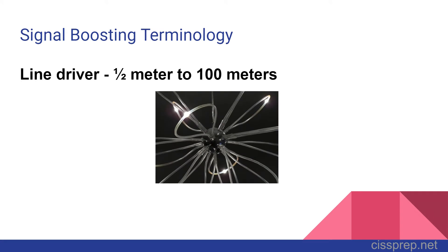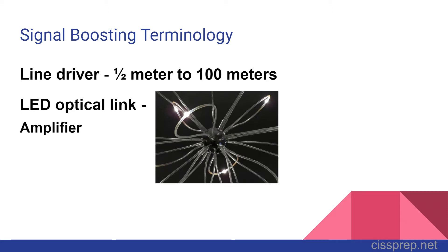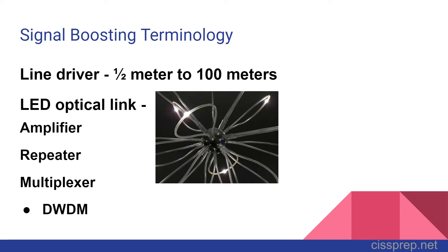A line driver is basically an internal signal amplifier. Signals typically can't travel more than half a meter before they start to attenuate, so the line driver in theory can boost that signal to travel up to 100 meters. The light emitting diode or LED also acts as a line driver. Amplifiers are for analog signals and repeaters regenerate a digital signal and strip off the noise. Multiplexers combine signals into one path for transmission and are good for when there's limited bandwidth, ranging from simple hubs to sophisticated dense wave division multiplexers or DWDMs, which combine multiple optical signals on one strand of optical fiber.